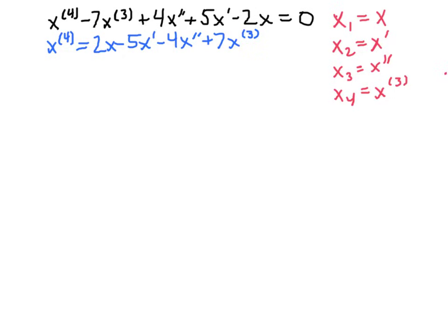We have all of those to substitute in, and then we want to make an observation. If we take the last equation — x sub 4 is the third derivative — and go on to do one more derivative, indicated in blue, we see that the fourth derivative is equal to x sub 4 prime. So we can now replace all the derivatives in the equation.